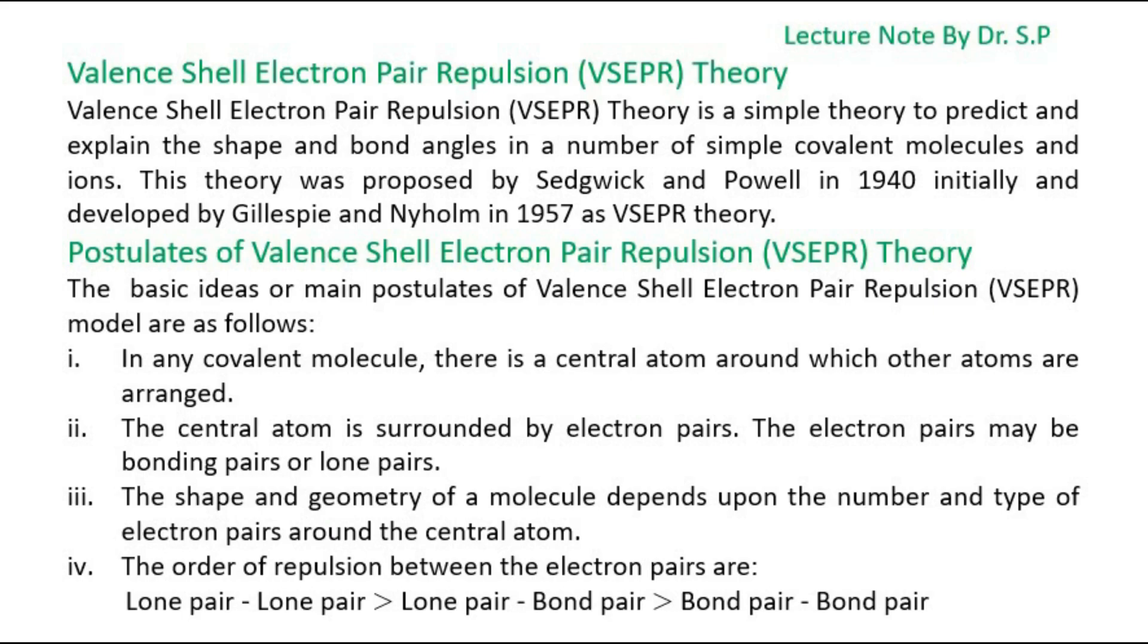The central atom is surrounded by electron pairs. The electron pairs may be bonding pairs or lone pairs.